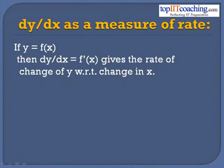If we have any function y equal to f of x, then dy/dx equal to f'(x) gives us the rate of change of y with respect to change in x. Here y is the dependent quantity and x represents the independent variable. So dy/dx, or the differential coefficient of any function at any point, gives us the rate of change of one quantity with respect to another quantity.